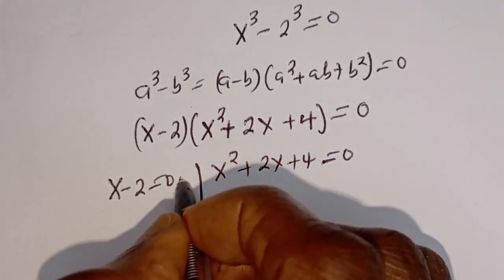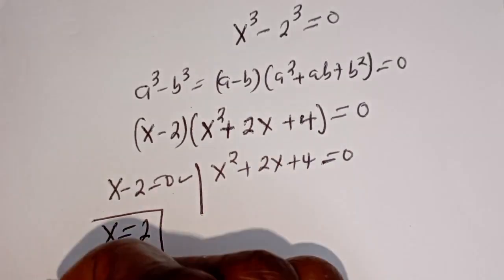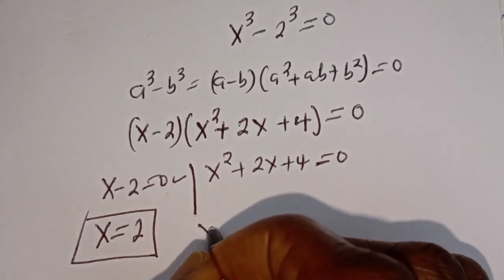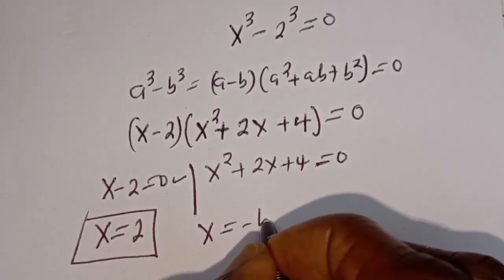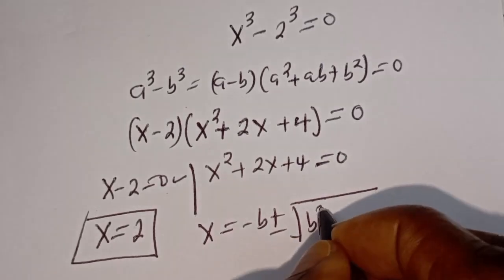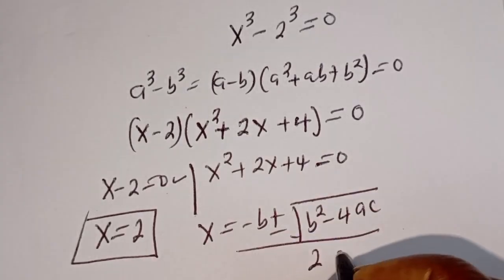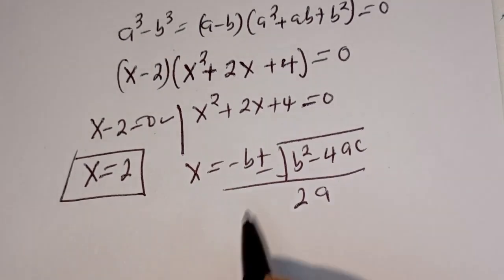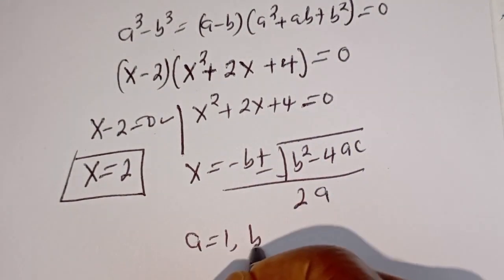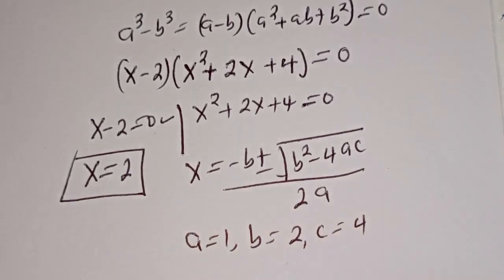Now we have two cases here. The first case is s minus 2 equal to 0, and the second case is s squared plus 2s plus 4 is equal to 0. From the first case, s is equal to 2. Then from the second case we use the quadratic general formula. From this equation, a equals 1, b equals 2, c equals 4.